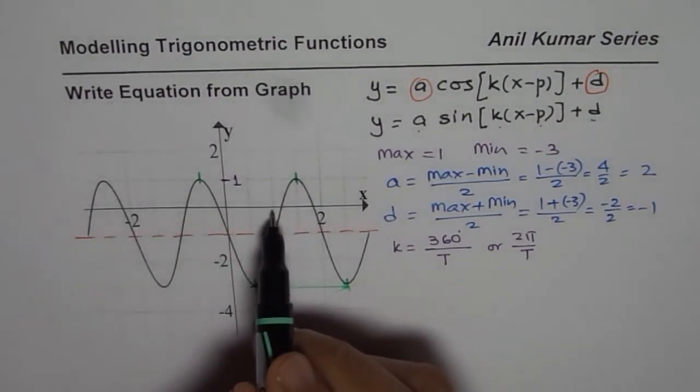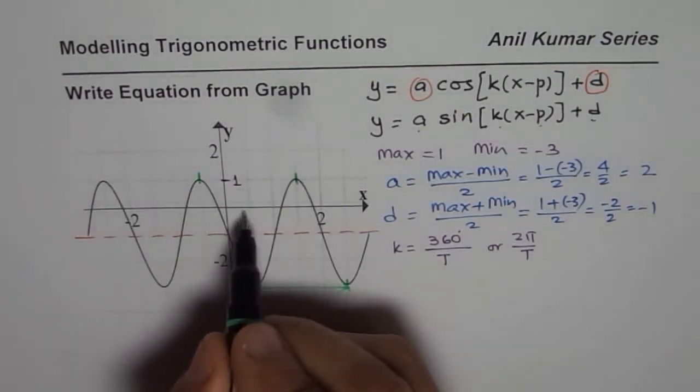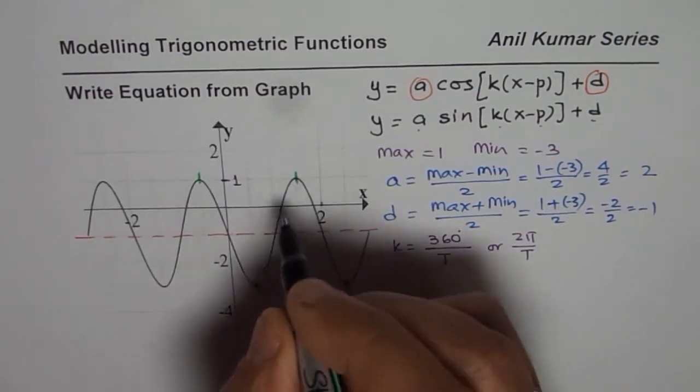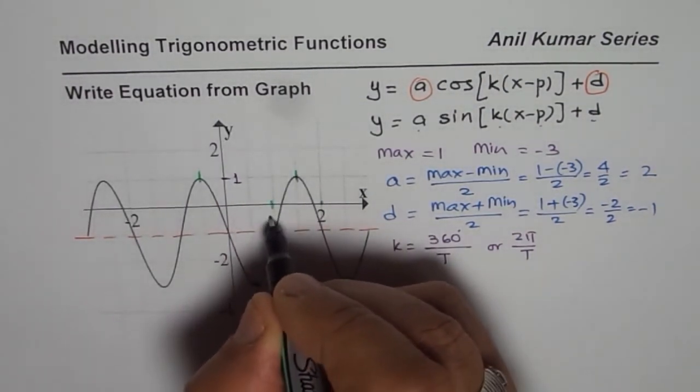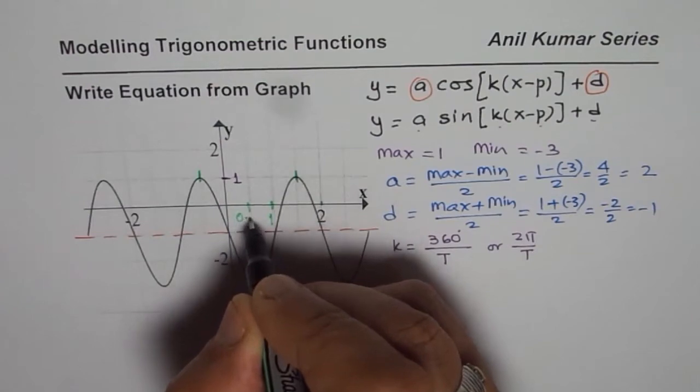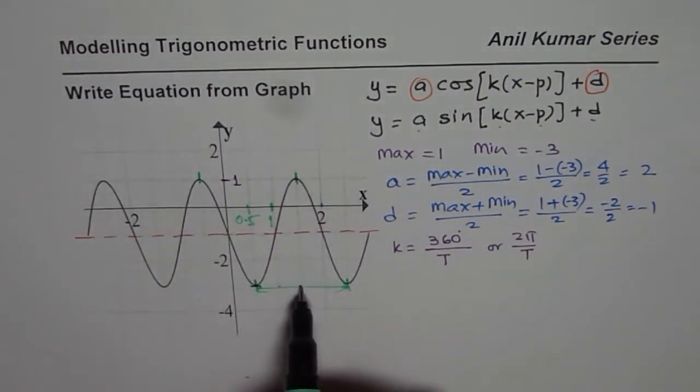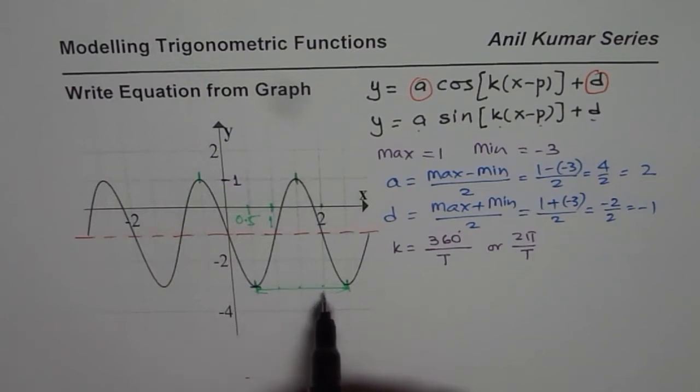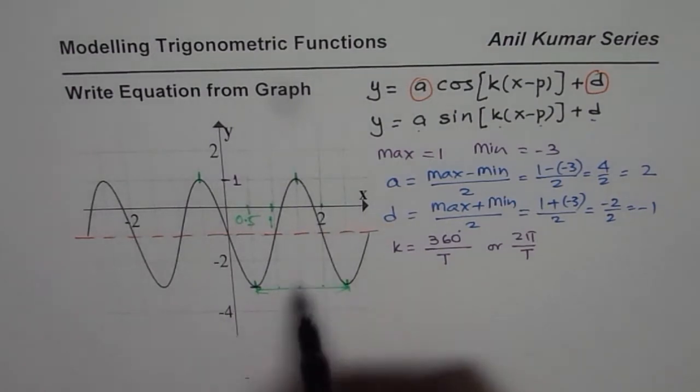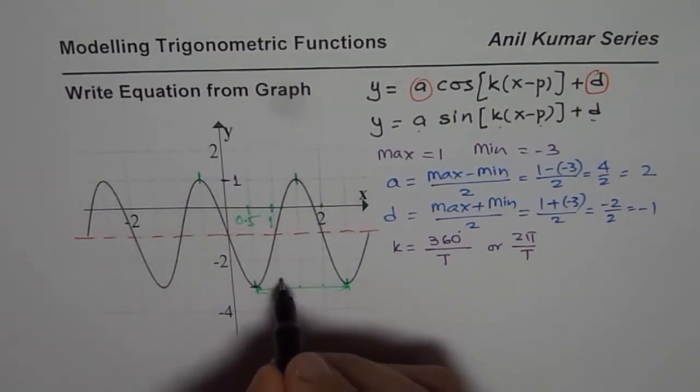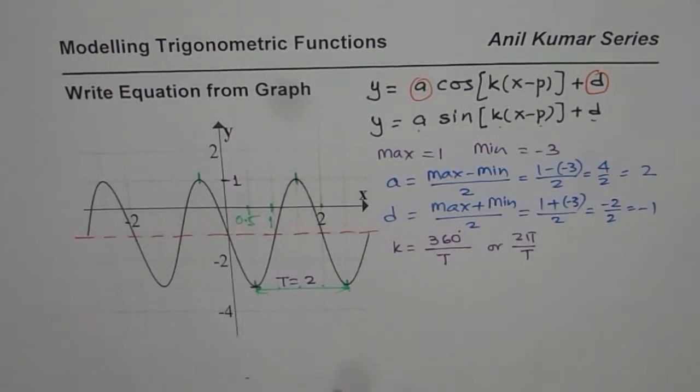Now each division here is how much? 4 divisions are 2, so 1 division is 0.5. So how many divisions do we have? 1, 2, 3, 4. So 4 divisions represents T as 2 units. This unit could be anything. So at present we can say from here that T equals 2 units.